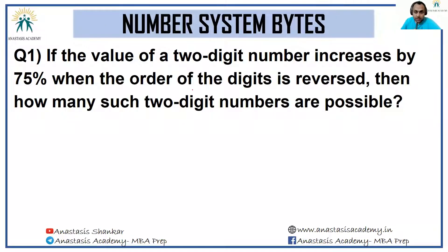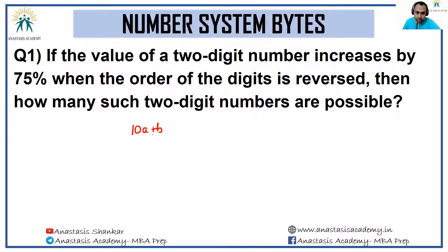Let's look at the solutions of number system. If the value of a two-digit number increases by 75 percent when the order of the digits is reversed, then how many such two-digit numbers are possible? Let's have a two-digit number written as 10a + b, where a is non-zero and b can be anything from zero to 9. This is a standard notation form we should know.